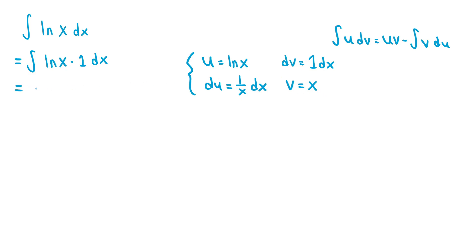So this is just equal to ln(x) times x, and then minus the integral of v du. Well, v is equal to x and du is equal to 1 over x dx. So this is minus the integral of x times 1 over x dx.